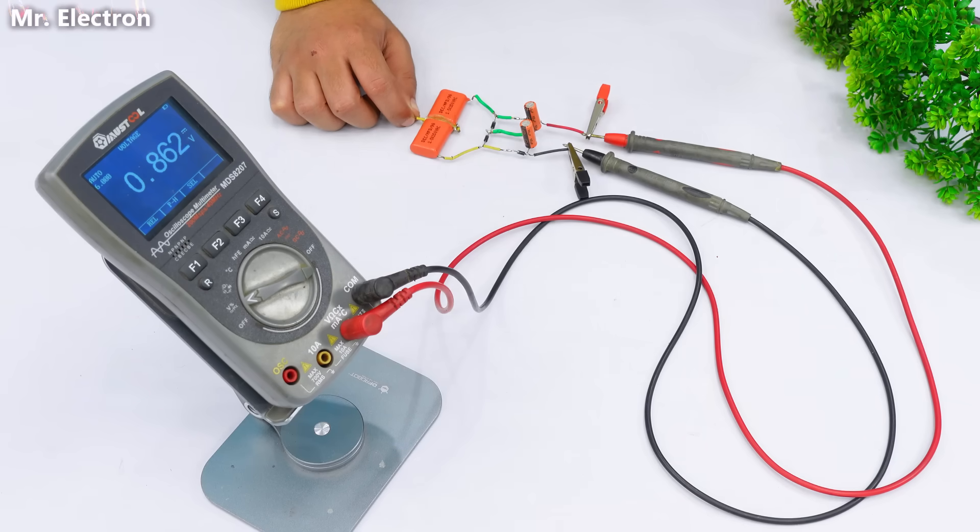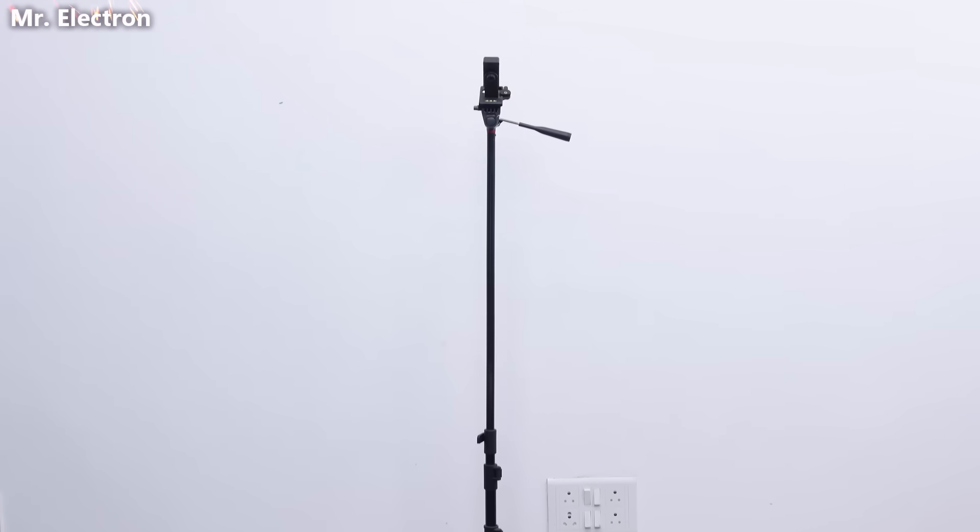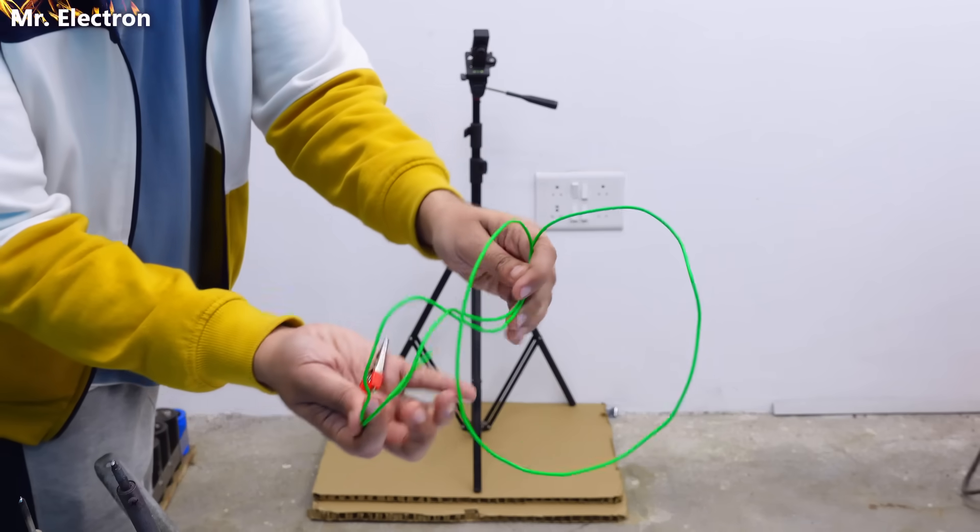Now this is my camera stand and at the bottom you can see some cardboard that is for isolating the tripod from ground. And this tripod is going to act as an antenna.